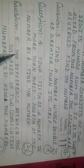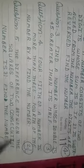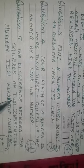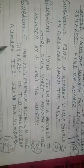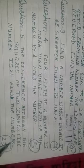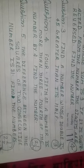Question Number 5. The difference between the squares of two consecutive numbers is 31. Find the numbers. This question 2 whole 1 upon 2 marks.